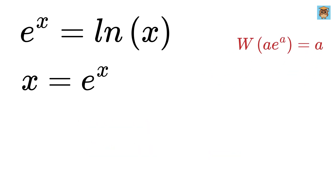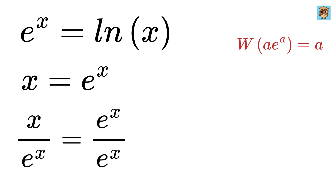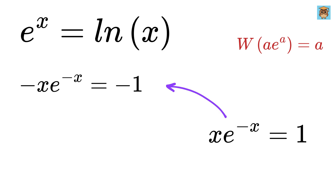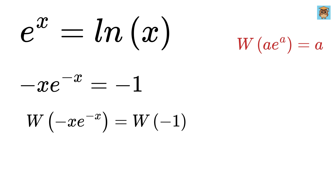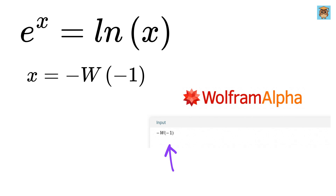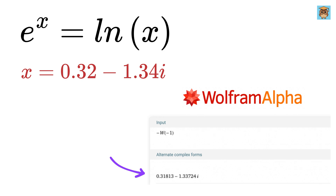So now let us try to use this W function on our equation e to the x equals x. Divide by e to the x on both sides to get x times e to the minus x equals 1. Since this is minus x, we need to make this side also minus x — put a minus sign on both sides to get minus x times e to the minus x equals minus 1. Applying the W function on both sides and comparing, this becomes minus x equals W of minus 1, so x equals minus of W of minus 1. Asking Wolfram Alpha for the value of minus W of minus 1, this equals a complex number, which is our solution.